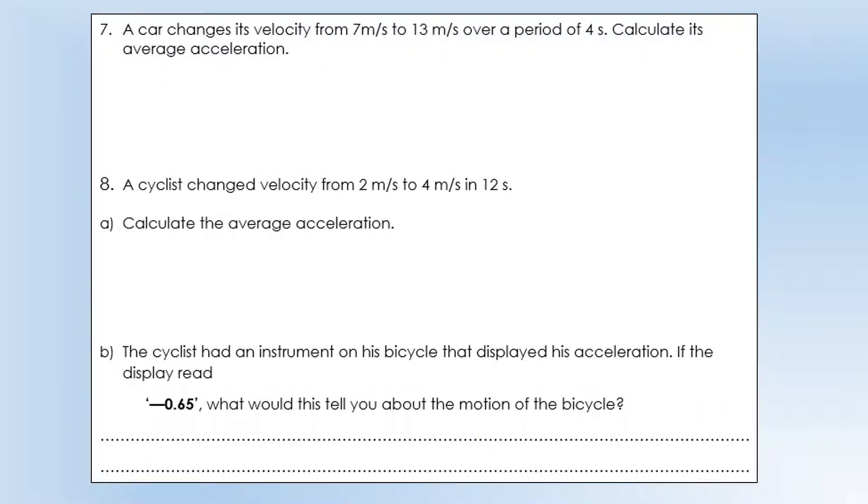The car changes its velocity from 7 to 13 meters per second over a period of 4 seconds. Calculate its average acceleration. Average acceleration is just the change of velocity divided by the time taken. We don't know if it's been constant, but this is the average, and so we can calculate that. Similar type question next. We've got a change in velocity and a time, so we can get average acceleration from that too.